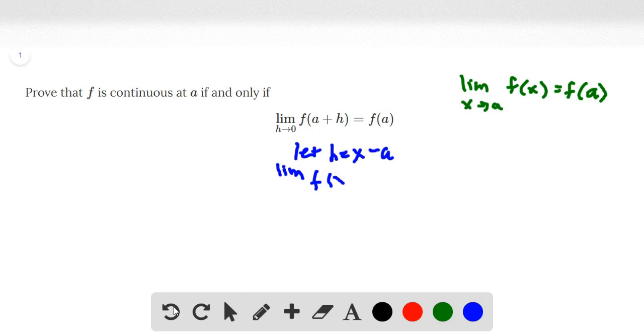Or let me replace it instead as a plus h, which is x minus a, equals f(a). And then a, we can keep the same. Since h is x minus a, we're going to show it as x minus a approaching 0.